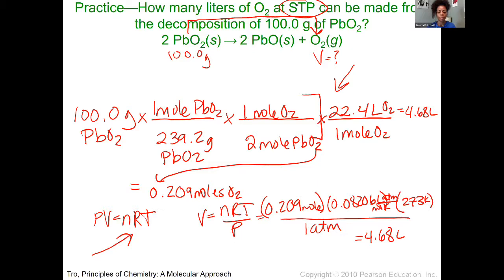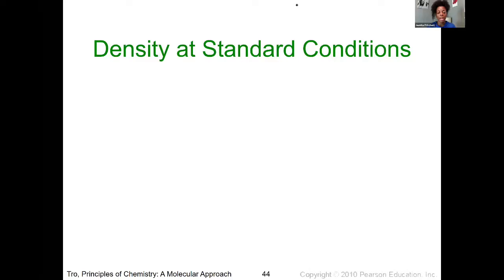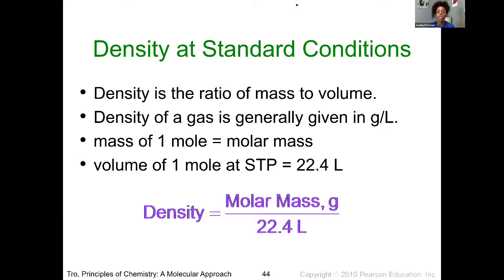Another great thing we can figure out from having an idea of the molar volume is helping to predict the density at standard conditions. Density is the ratio of mass to volume — traditionally grams per liter for gases. We know the molar mass relates the mass of something to one mole. So if we are at STP, we can easily calculate the density of a substance by taking the molar mass and dividing it by the molar volume.